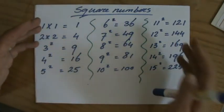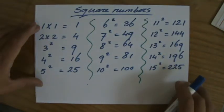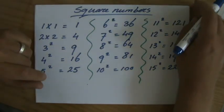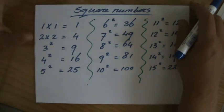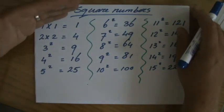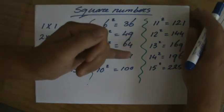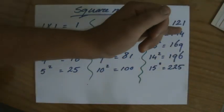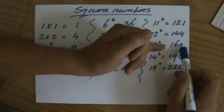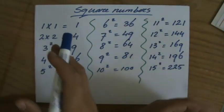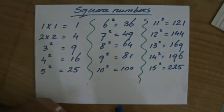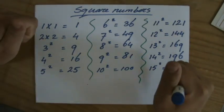So perhaps five minutes every evening before you go to bed, or when you're having dinner with your parents, and you can show off to your brothers and sisters as well. 1, 4, 9, 16, 25, 36, 49, 64, 81, 100, 121, 144, 169, 196, and 225. Square numbers. All the best.